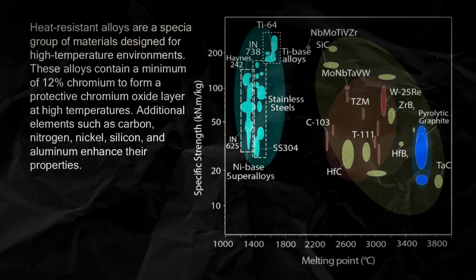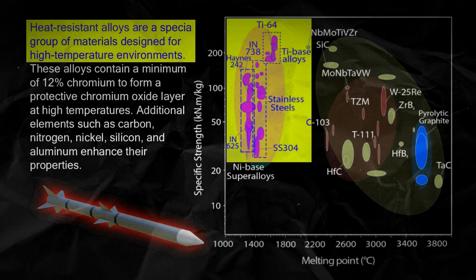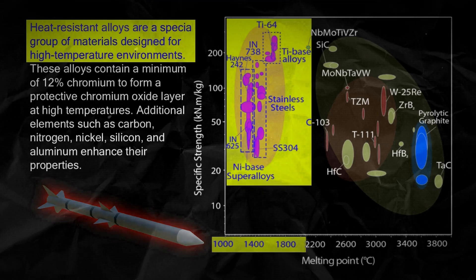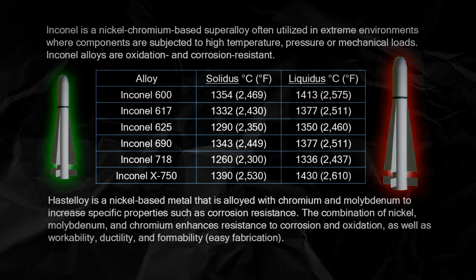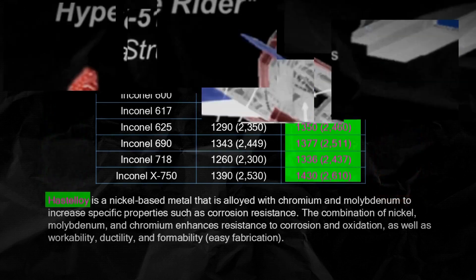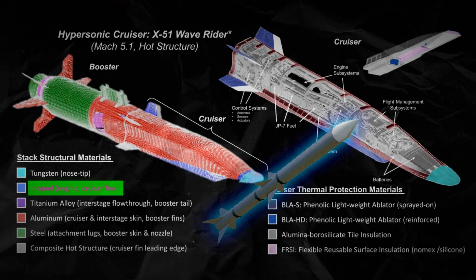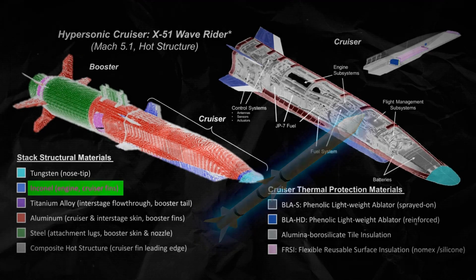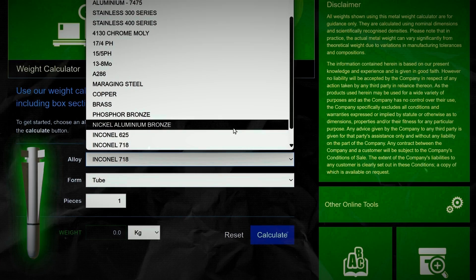First and foremost, we have heat-resistant alloys. These metals are like superheroes capable of withstanding temperatures that would melt most materials. Think of nickel-based super-alloys like Inconel and Haste Alloy. They're used in critical components like the engine and structural frames. But remember, these alloys aren't just strong—they're also lightweight, which is crucial in hypersonic flight.